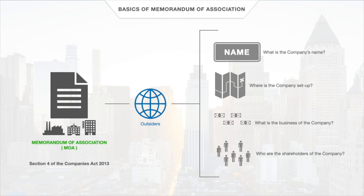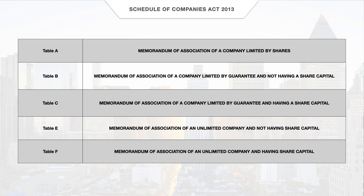To make things even simpler, the government has included a schedule in the Act. This schedule contains various tables with different formats of a memorandum of association that may be directly adopted by the company with suitable adjustments, such as filling out factual details.